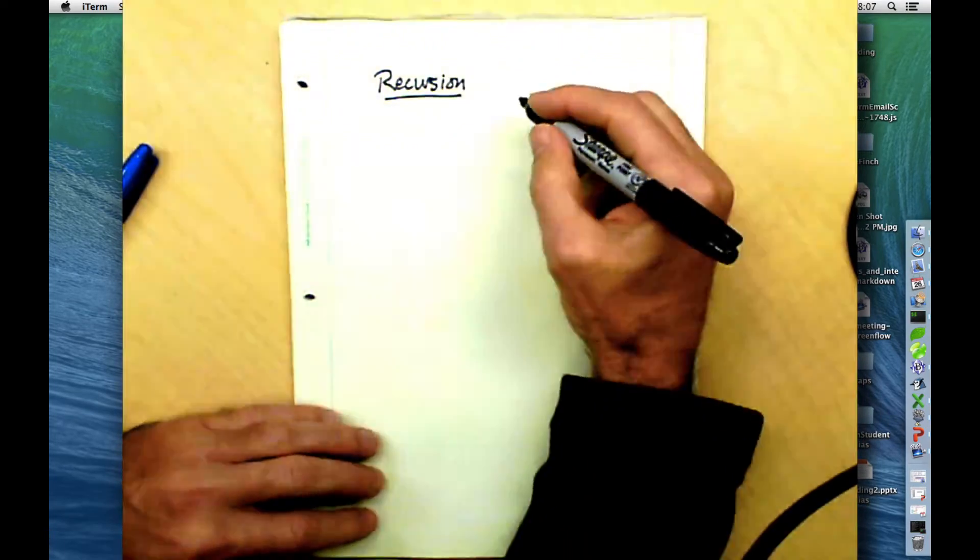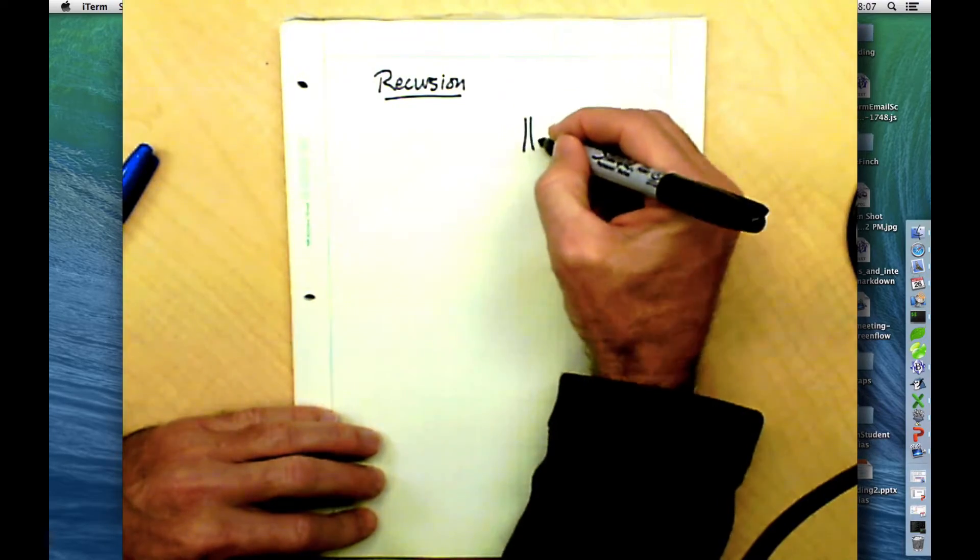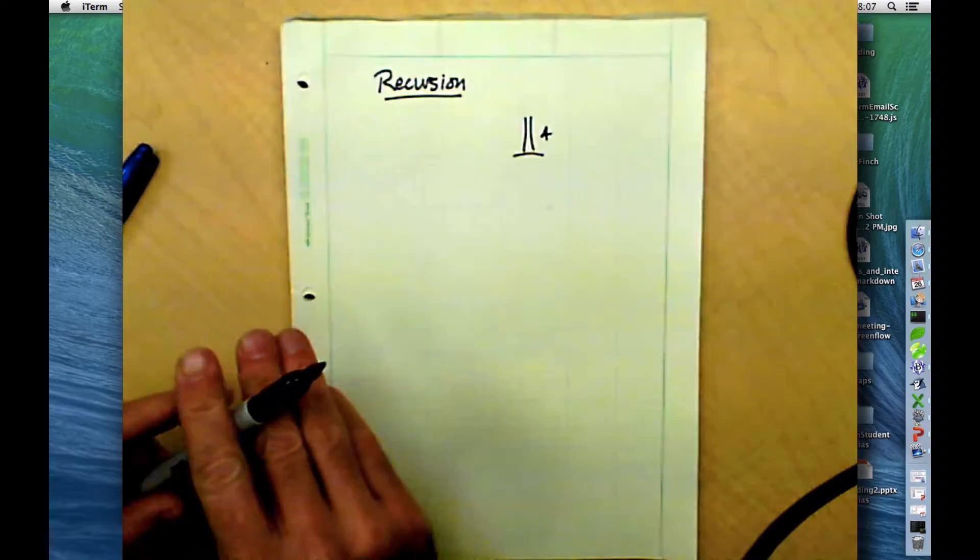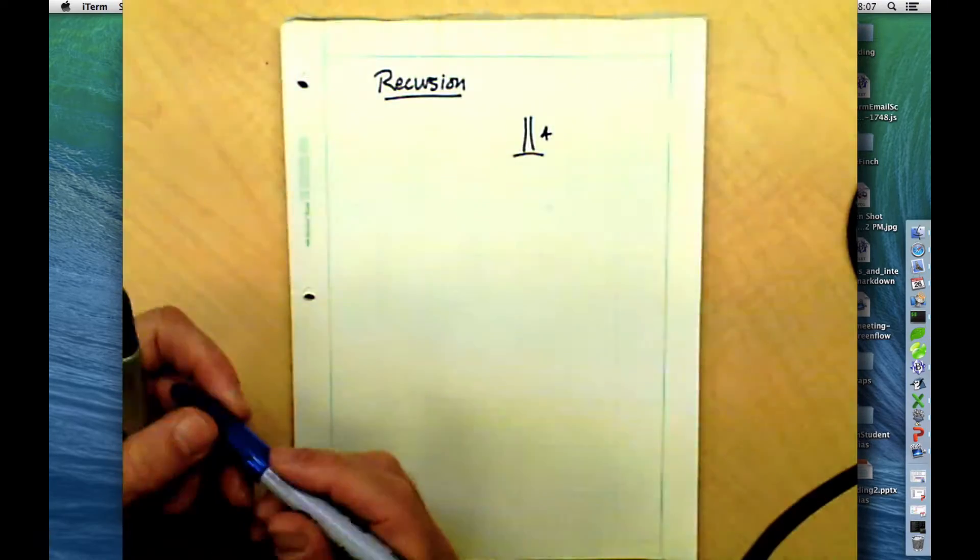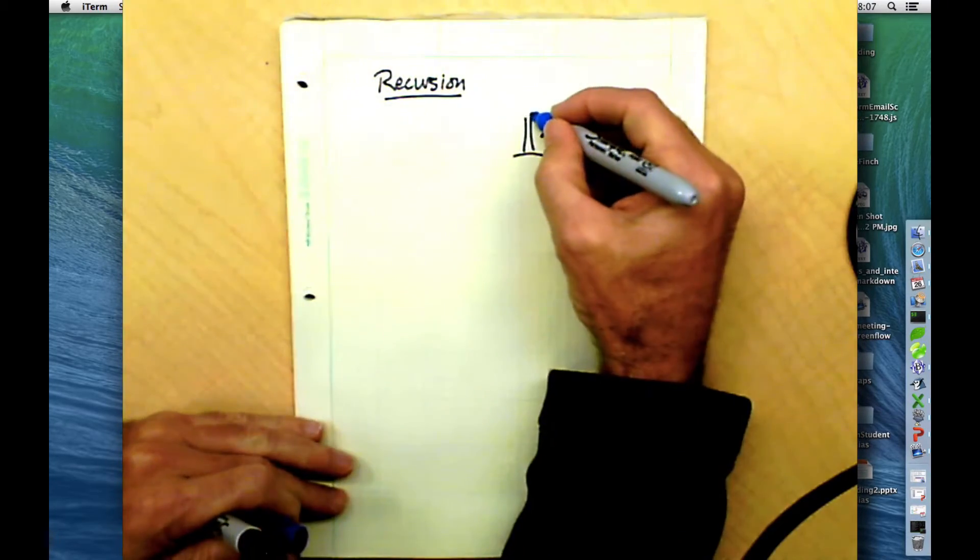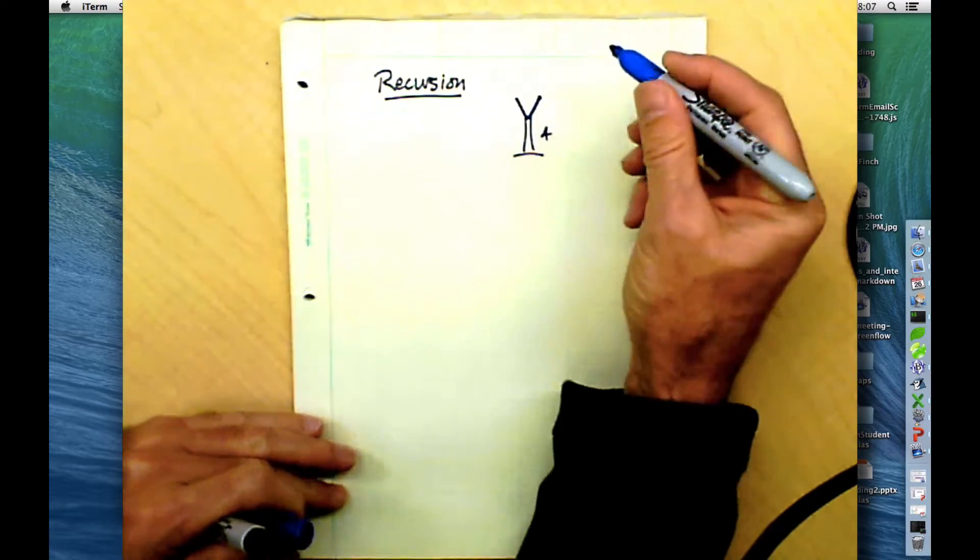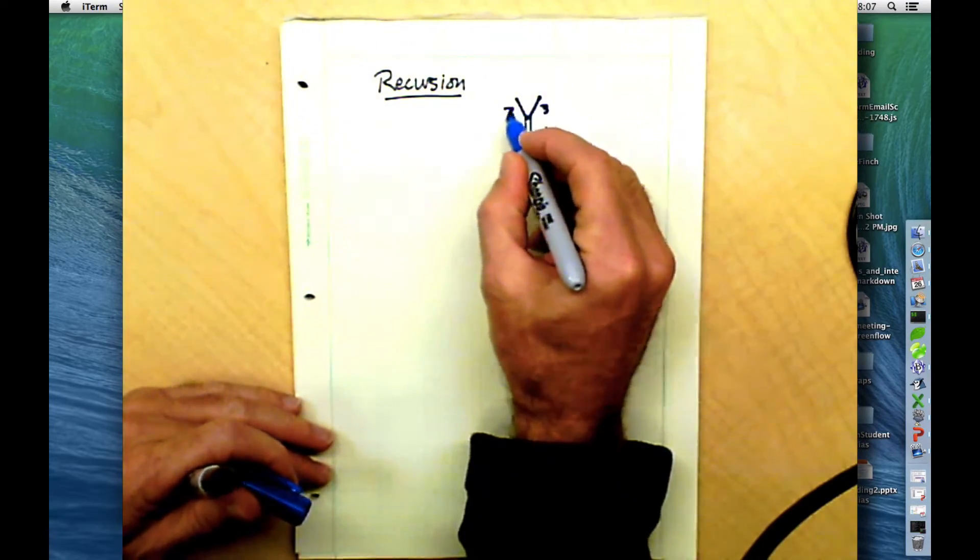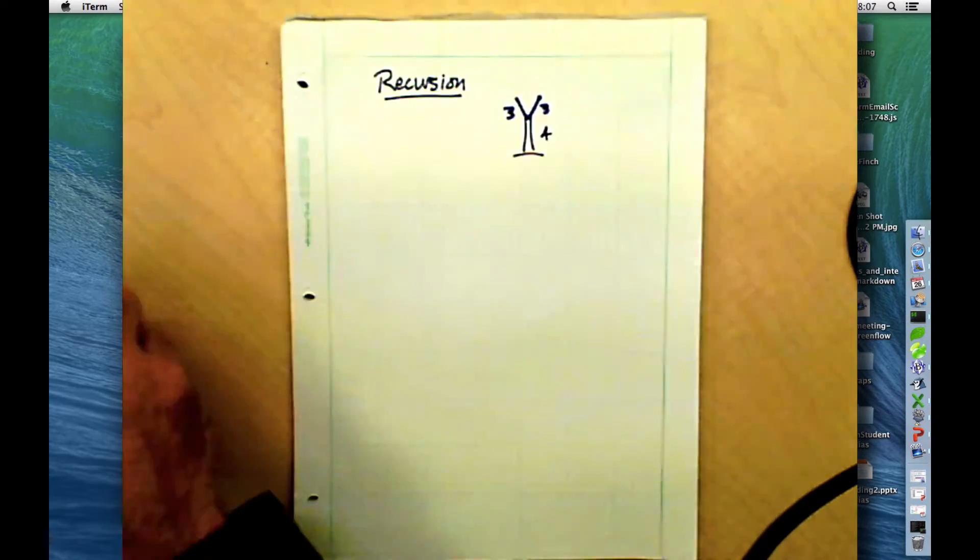Maybe a common example might be the idea of a tree. A tree trunk maybe has an initial height of four feet. And you know what happens with tree trunks - they branch out, they produce branches. So we'll have a couple of branches branching out, each with a length of three. And then branches, of course, branch.